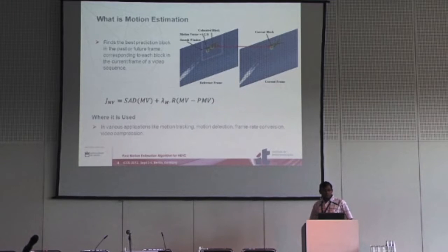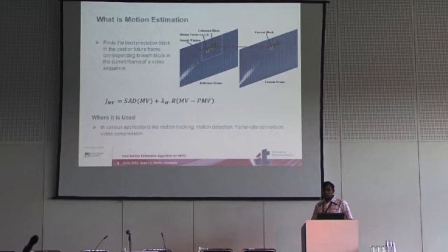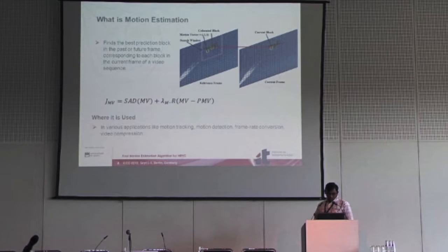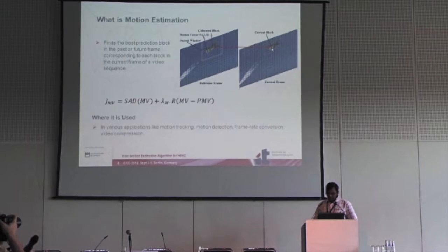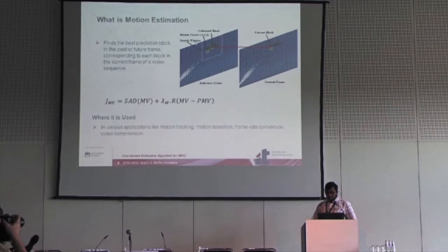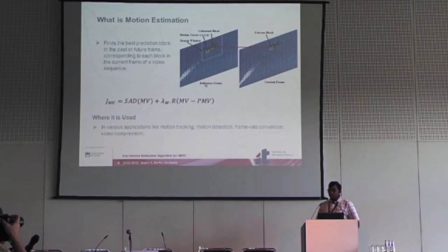Motion estimation is a type of predictive block coding. Just like in adaptive DPCM, we have motion estimation followed by compensation. The basic goal of motion estimation is to find the best predicted block in the reference frame — either past or future — corresponding to each block of the current frame. The collocated block and search window are identified, and we search for the best matched block. The shift of this block is denoted as the motion vector and is signaled to the decoder.